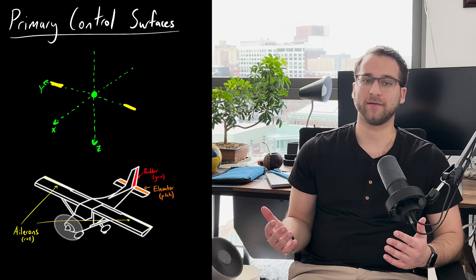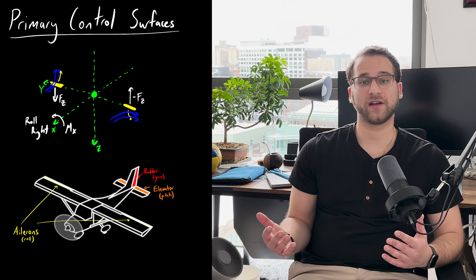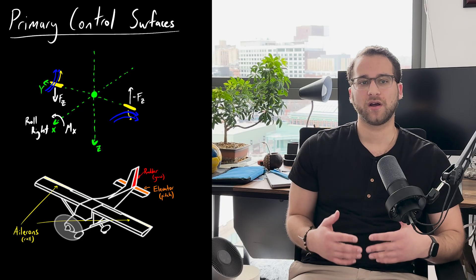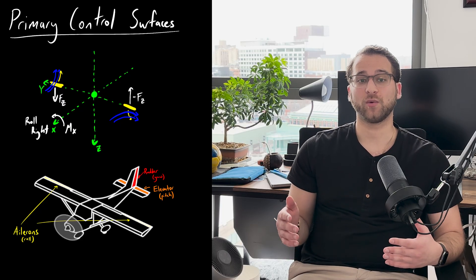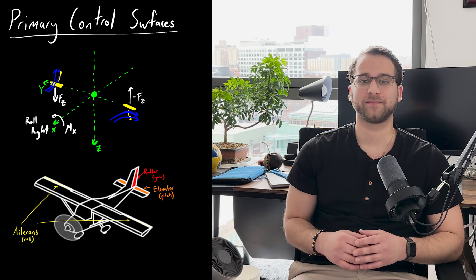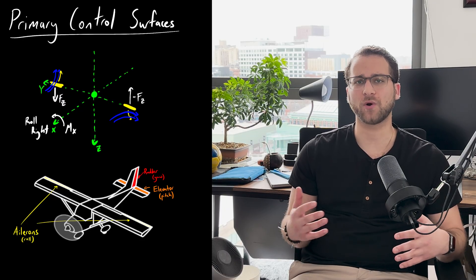The ailerons control the roll of the plane. Being located on the outside wings, they deflect in opposite directions in order to create this rolling motion. If the right aileron is up, the right wing will be forced down by the airflow, and the left aileron will be down, forcing that wing upwards. As a result, the plane will begin to roll to the right.